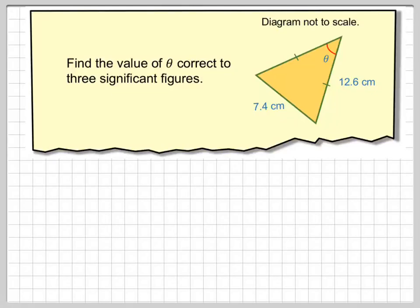Right, in this video we're going to find a missing angle on an isosceles triangle given its lengths. We know the triangle is isosceles because of this line and this line, so it says find the value of theta correct to three significant figures.